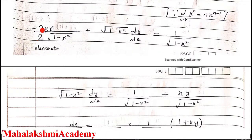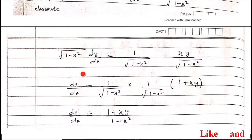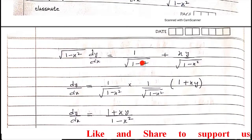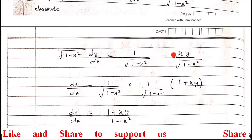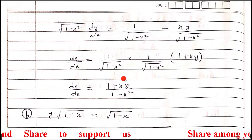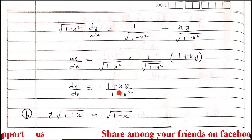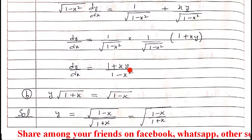The 2s cancel, and the negative term shifts to the right-hand side, becoming positive. Both denominators have root(1 − x²), so we take it common and get (1 + xy) in the bracket. Opening the bracket removes the root. So dy/dx equals y divided by (1 − x²), which is the answer for part a of question 9.